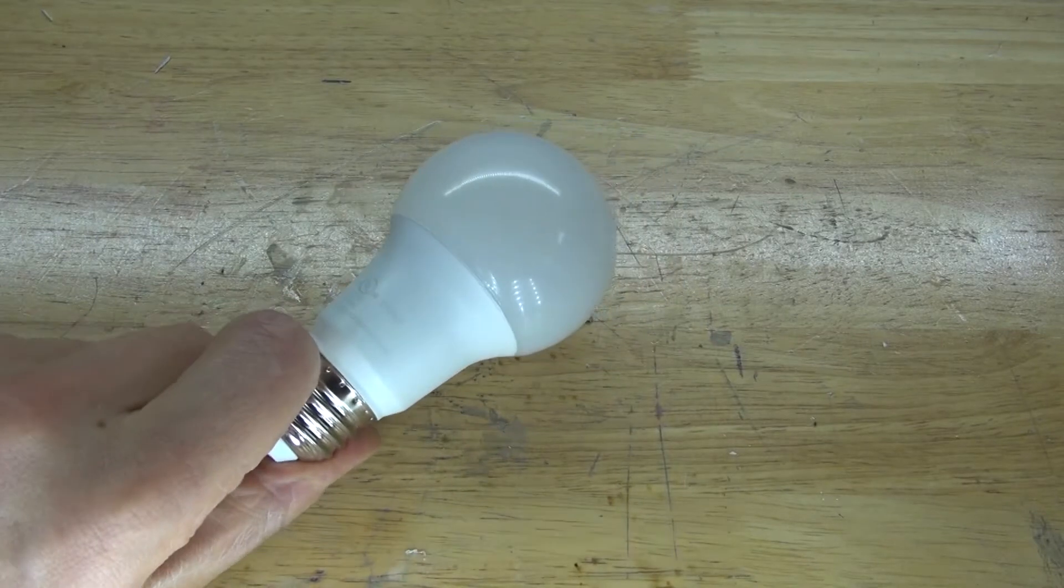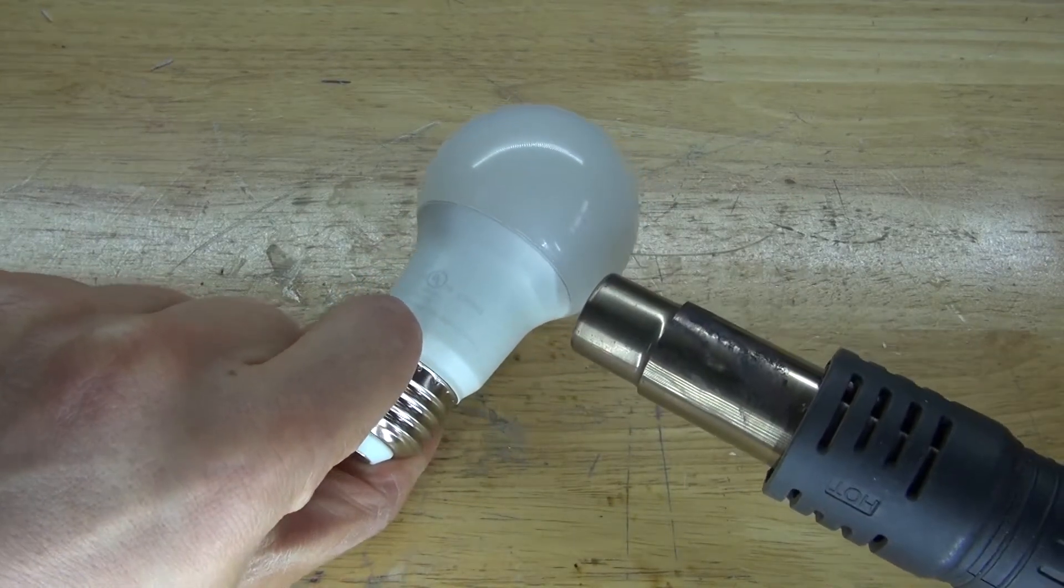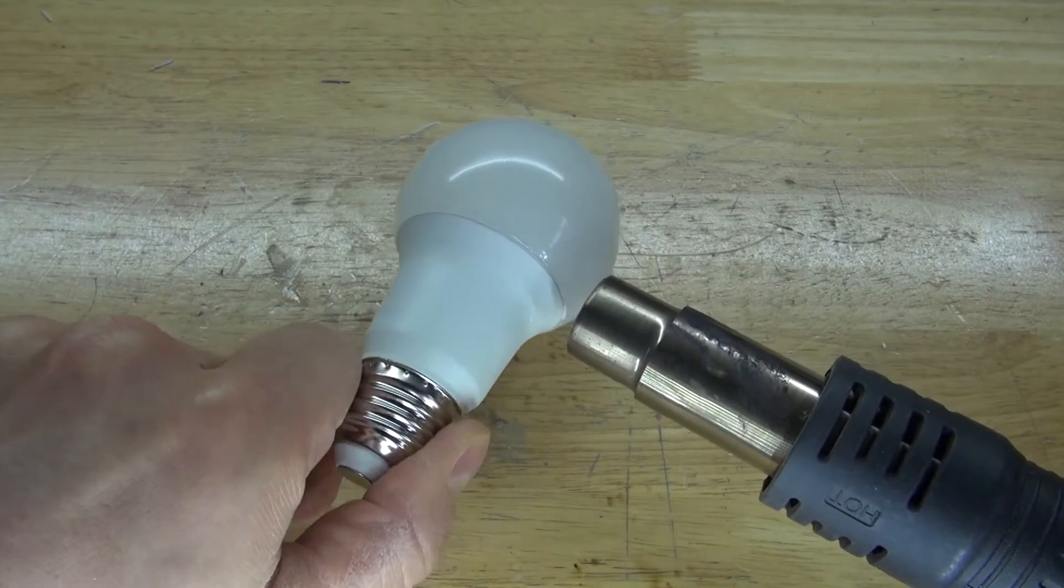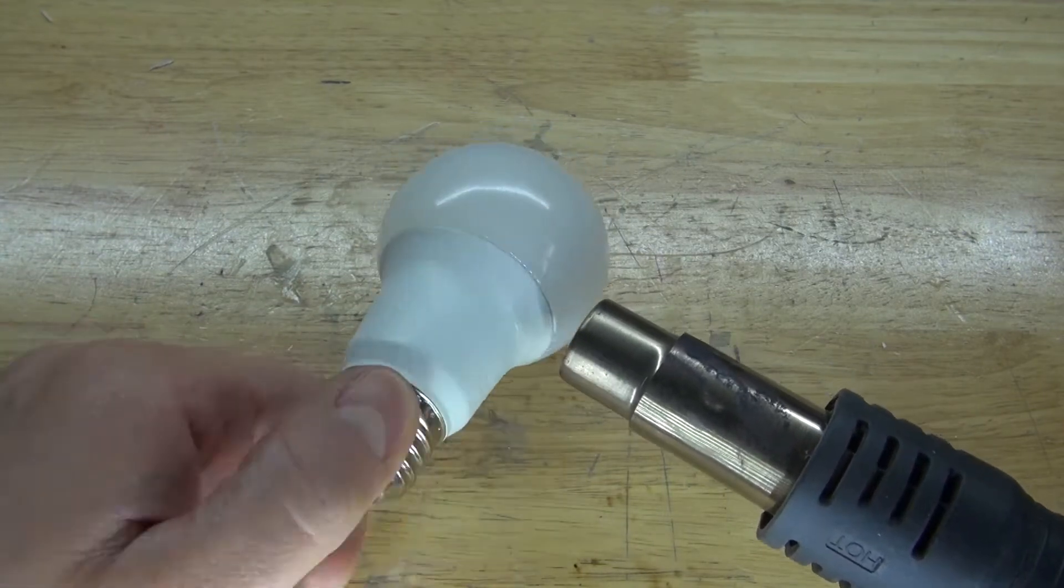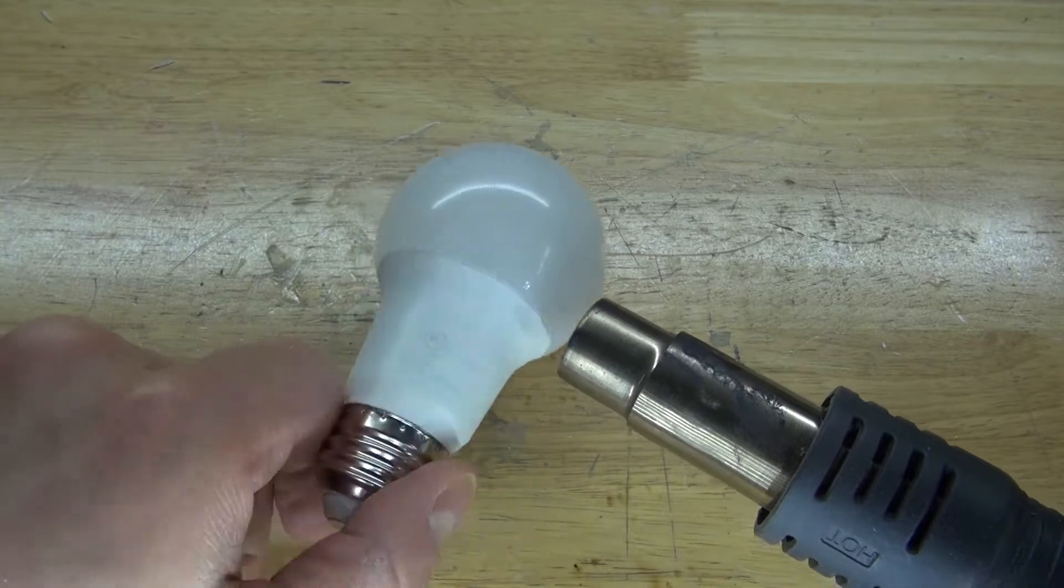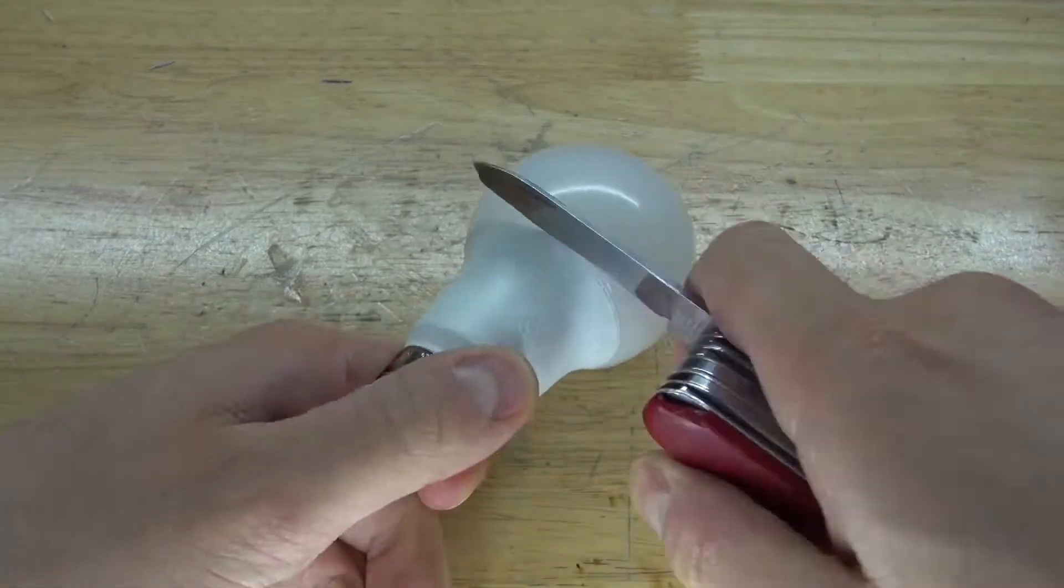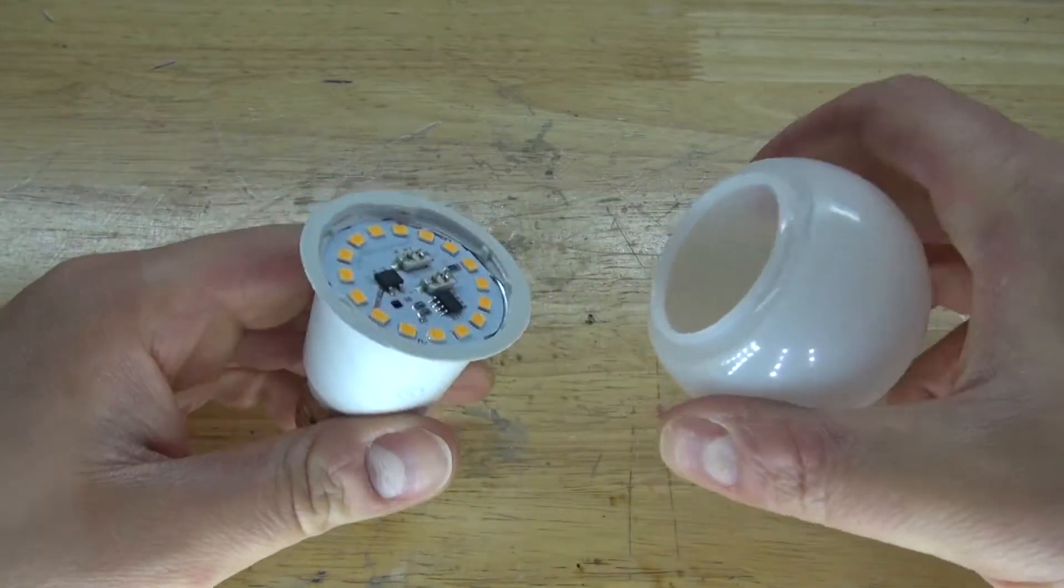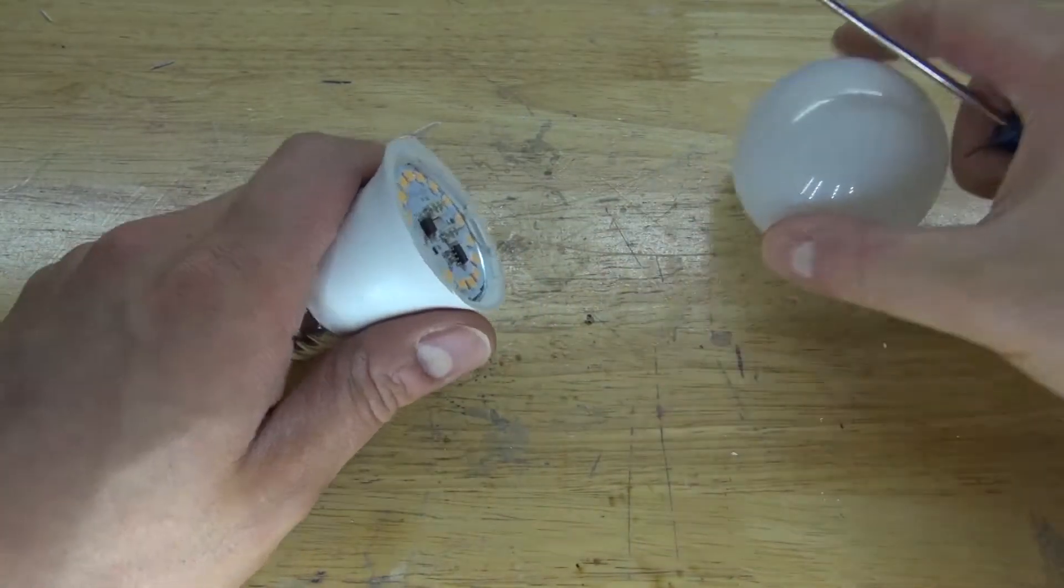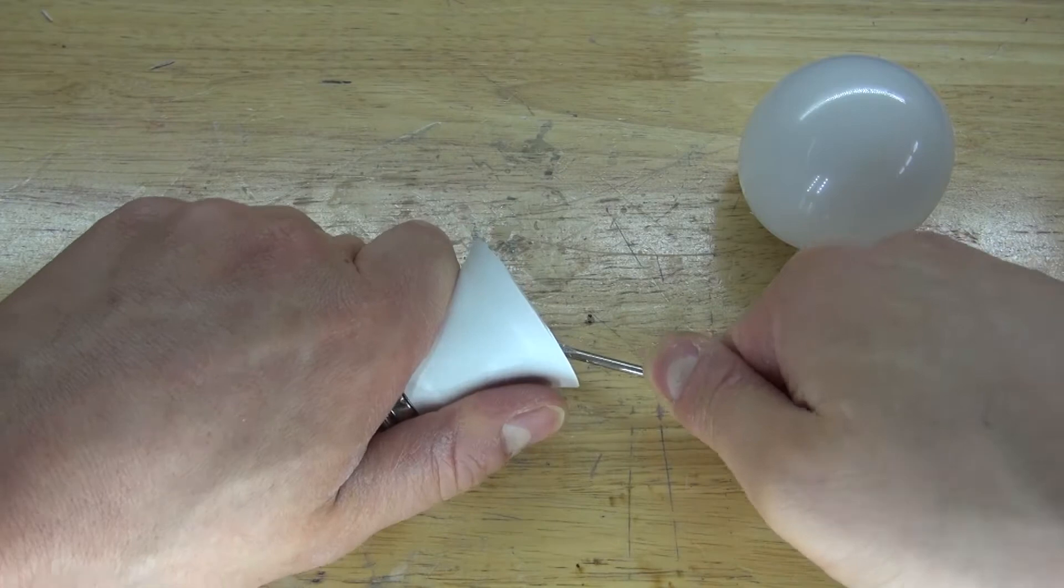Next what I need to do is take a hot air gun and melt the adhesive that is connecting these two parts together. And what I need to do is remove the dome first. Simply pry it open. And now pull it apart. And there, it is now separated. And what I need to do is remove the circuit that is attached to this lightbulb.